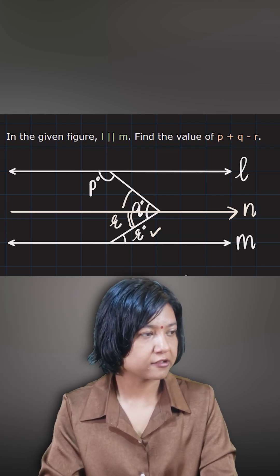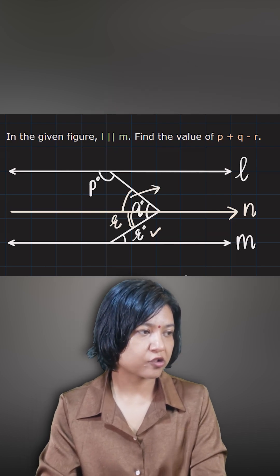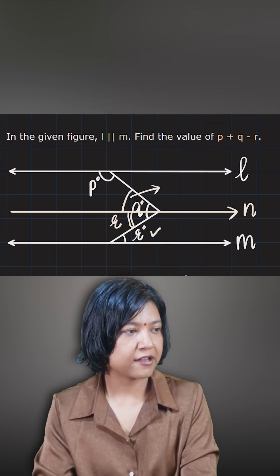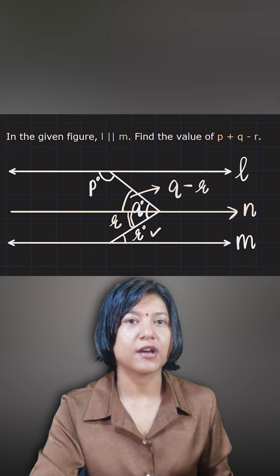And now what is the relation if you look at this angle? What should be the value of this angle? Now if this angle overall at this corner was q, because I'm removing r, this angle has to be q minus r.